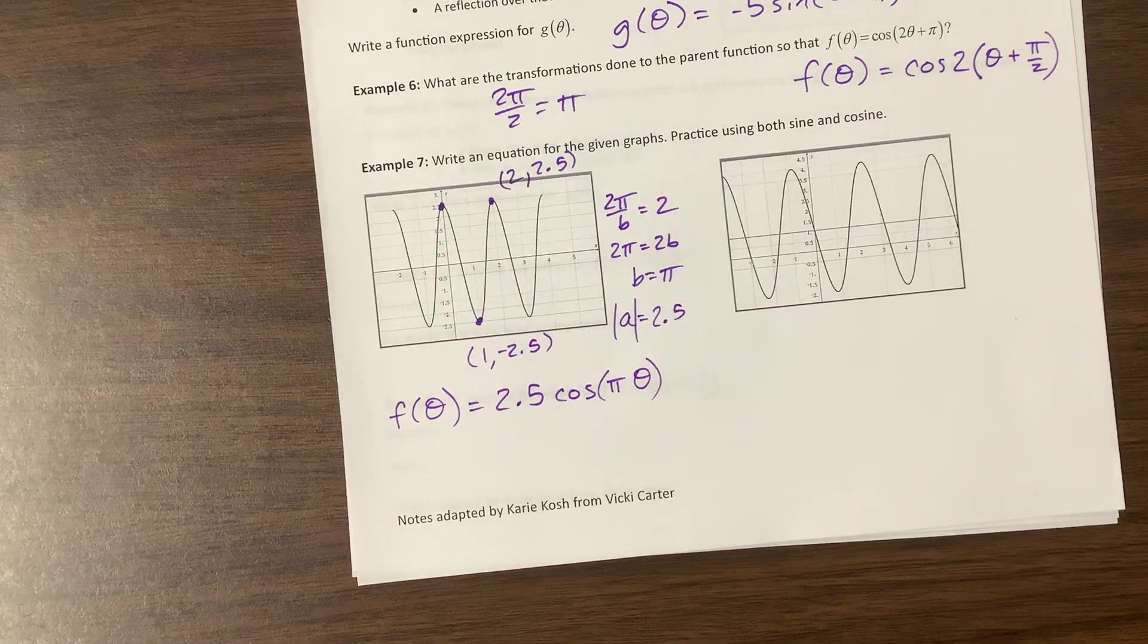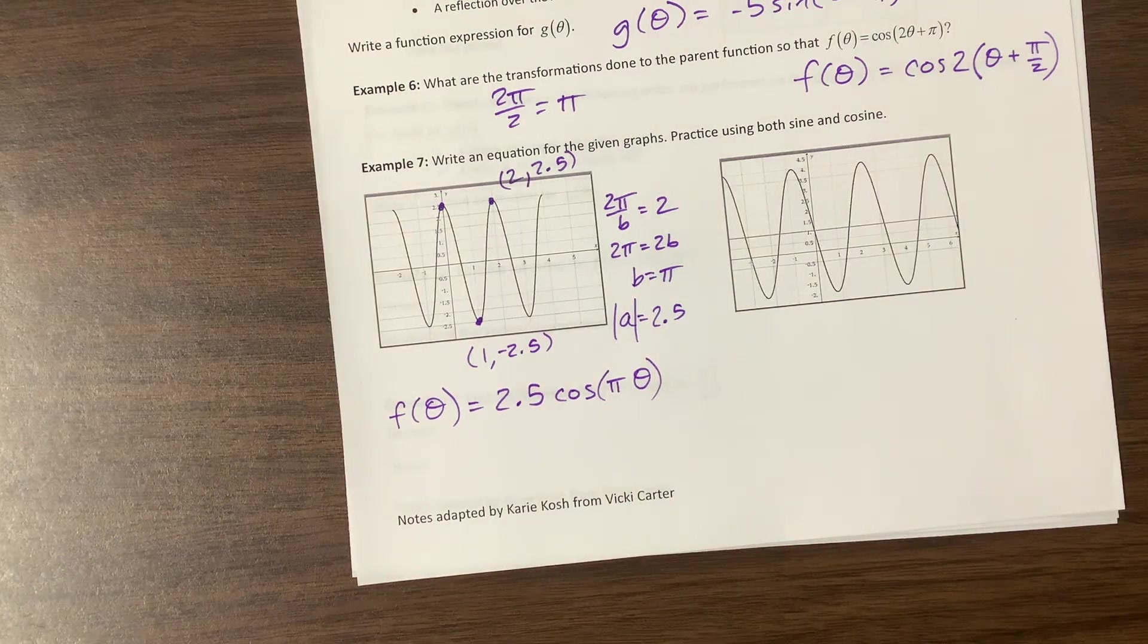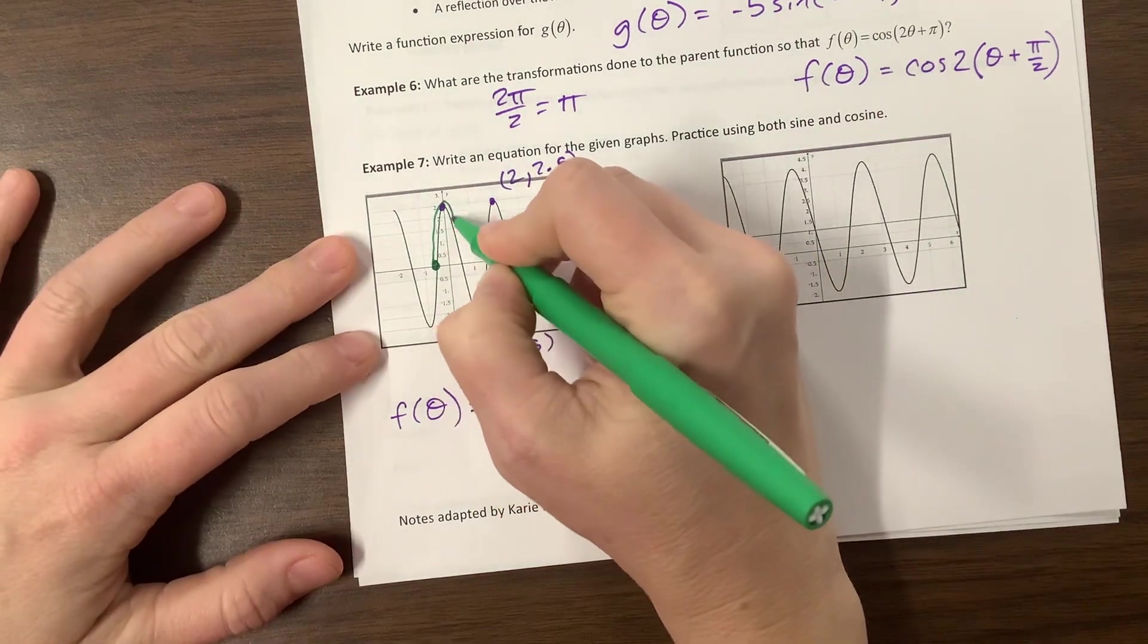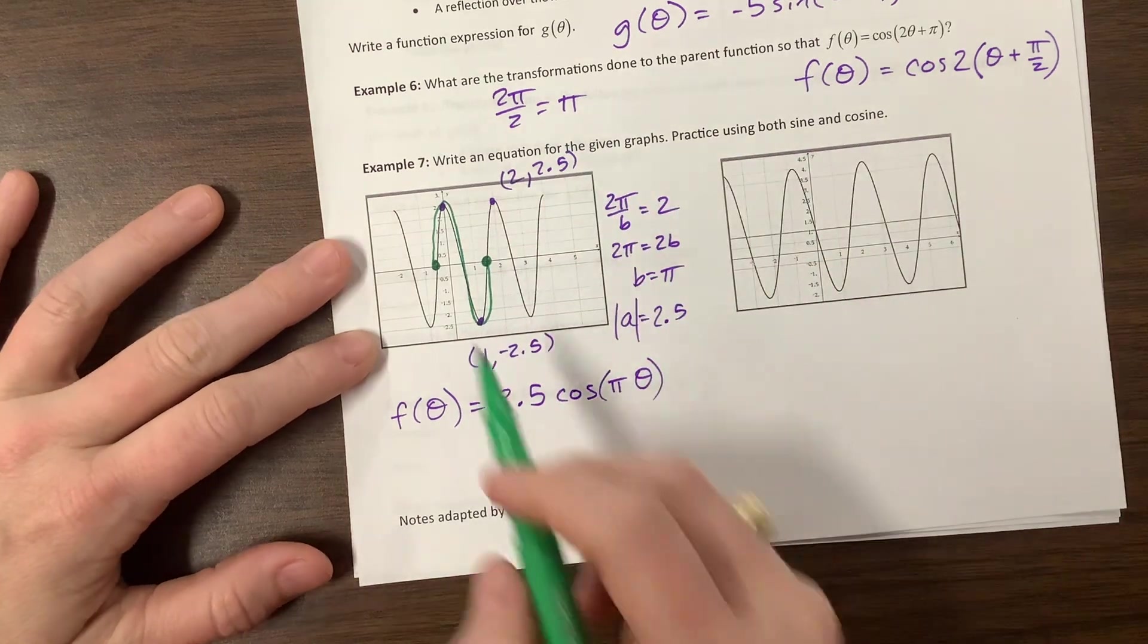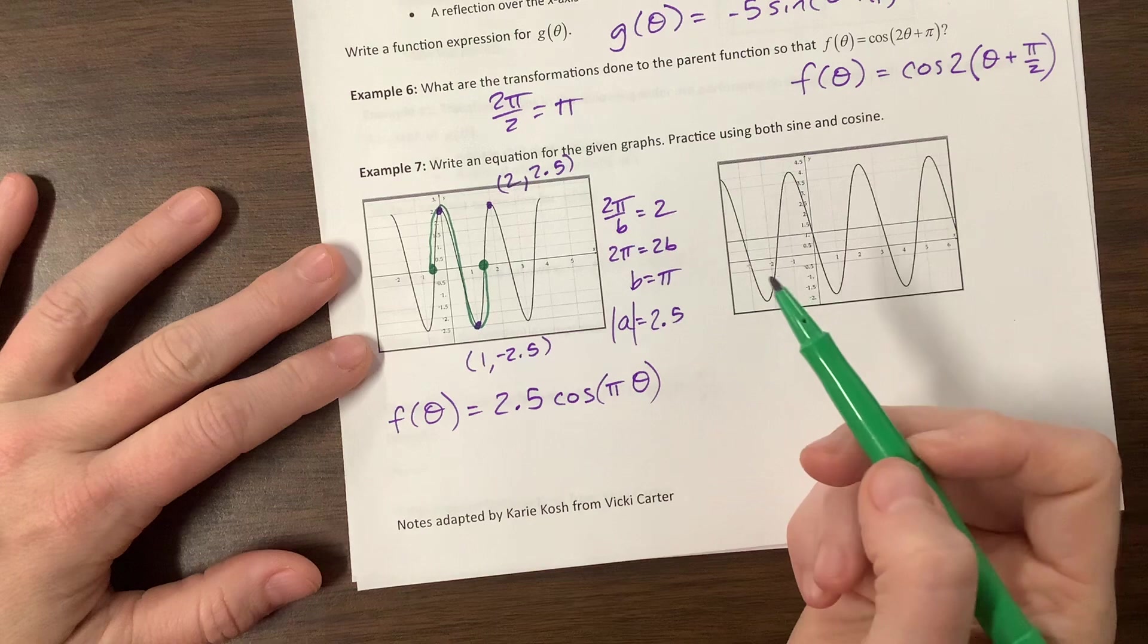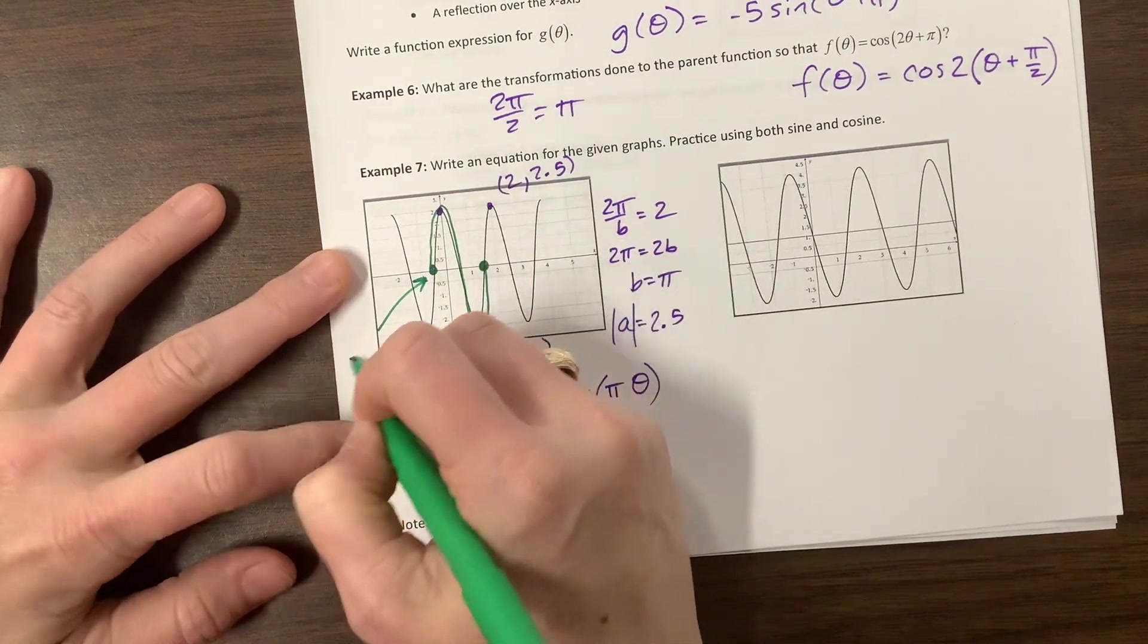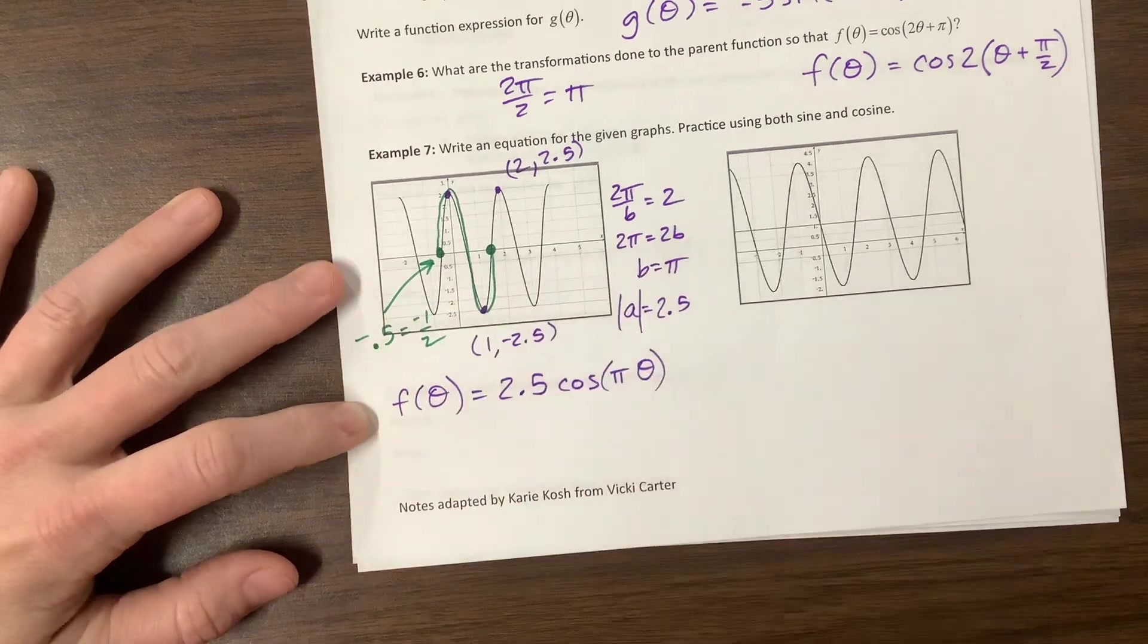The other option, okay, so now we also want to practice writing it as a sine function. Well, the way that I like to see a sine function is it starts in the middle, it goes up, it comes down, it comes back, and it ends up here. So on this one, I think that's the point one, negative 0.5 or negative one half.